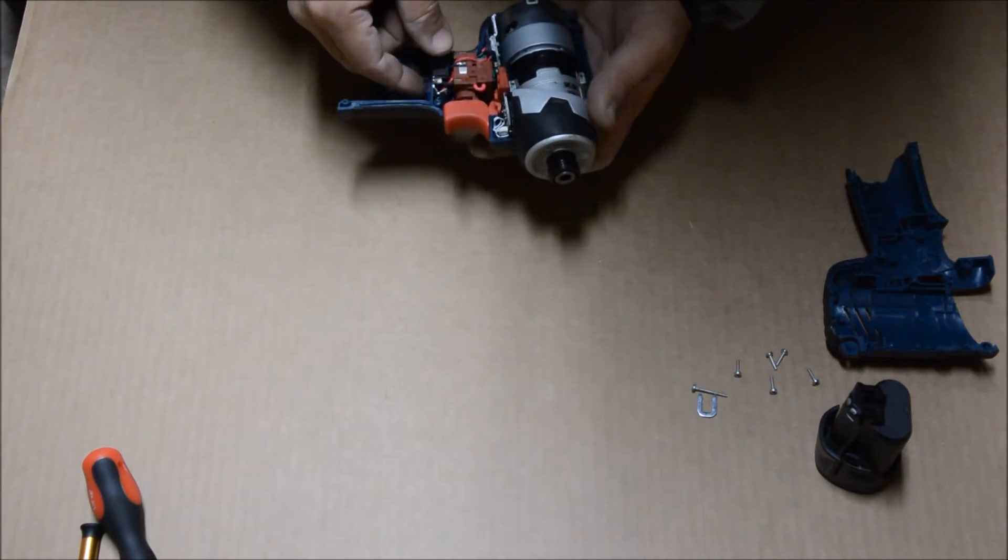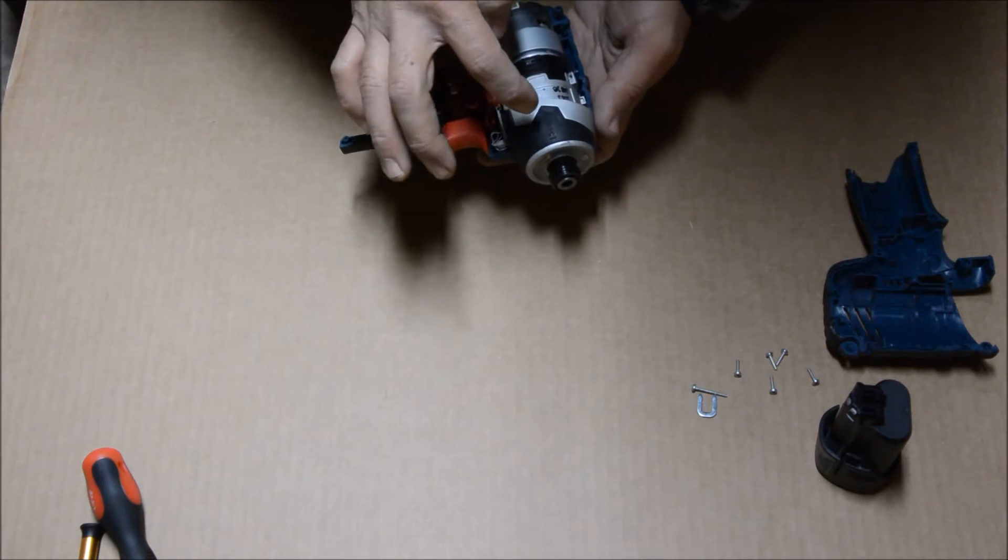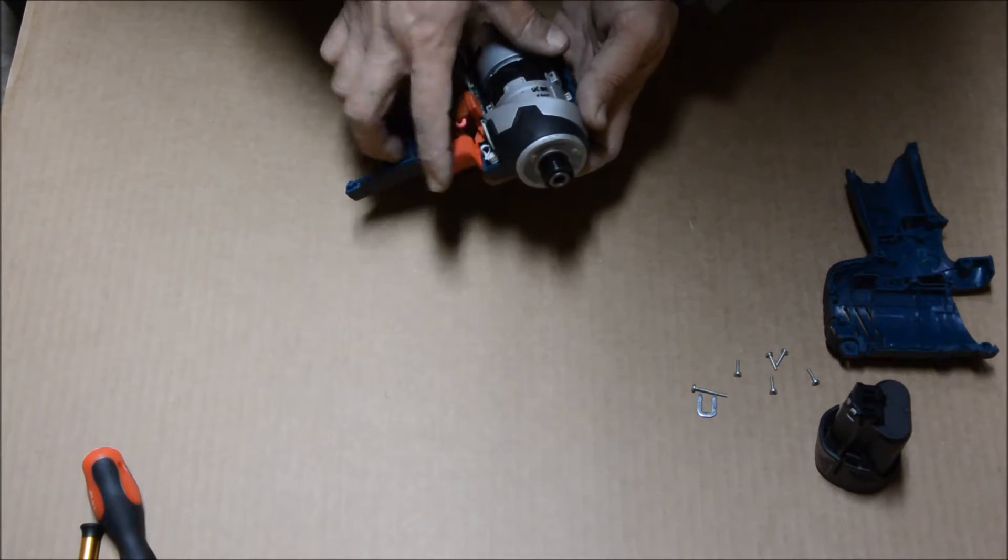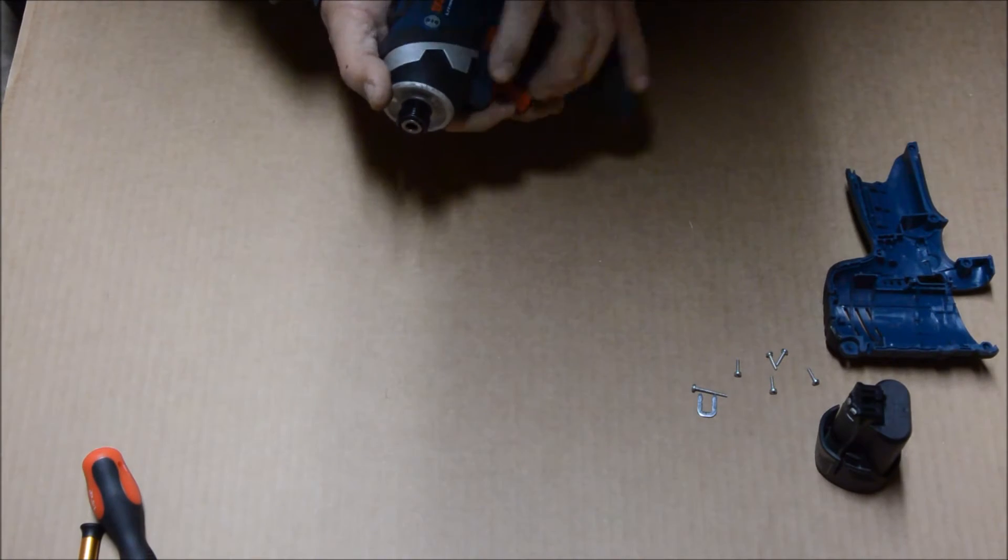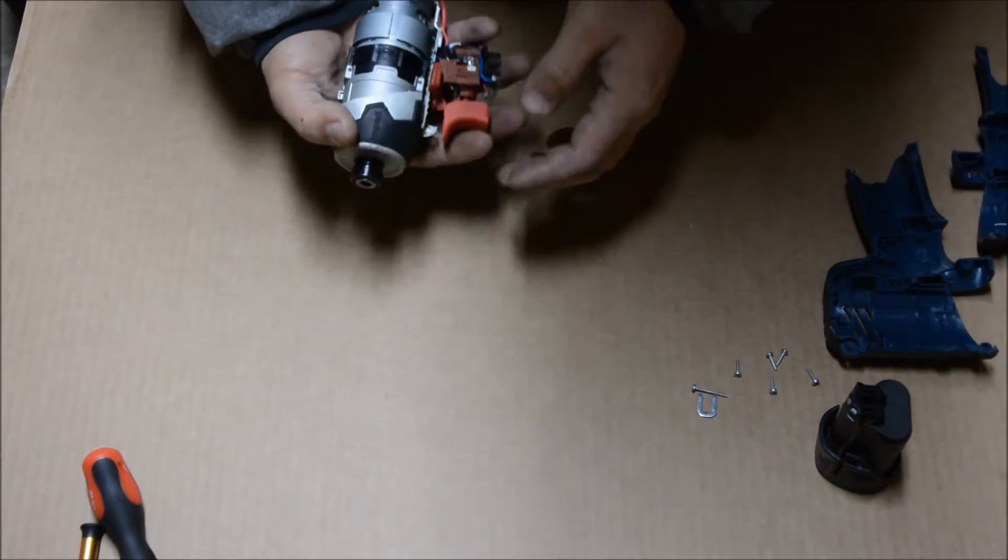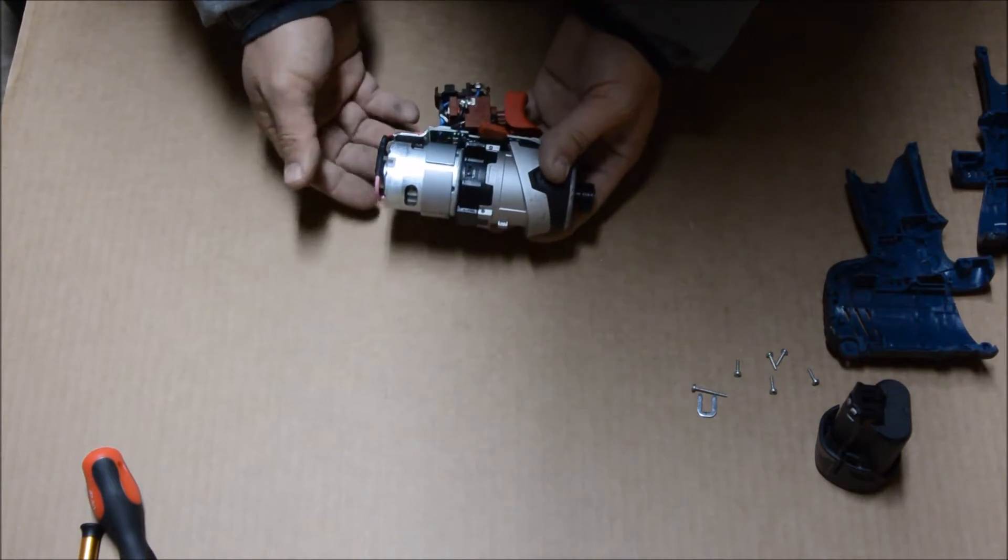And then you want to go ahead and remove the impact transmission, motor, and the electronics all together. So just remove it out of the shell. Now everything comes out, one unit.